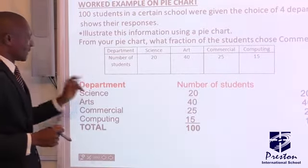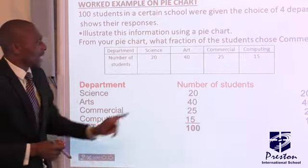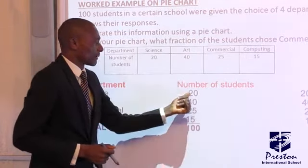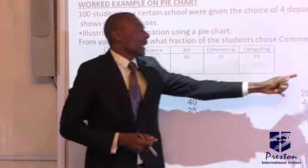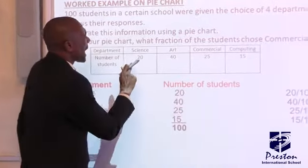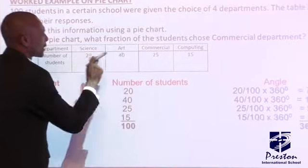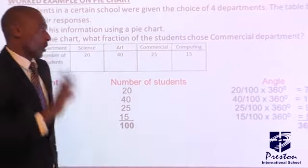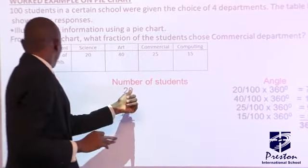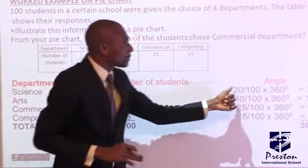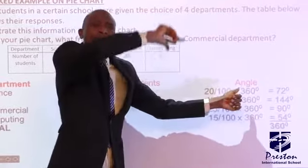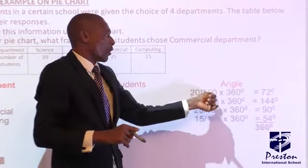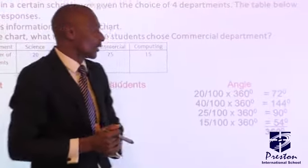The first thing is, these are the departments for science. How many students chose our science department? 20. How do I now get the angle? Getting the angle means, add everything together here. 20 plus 40 plus 25 plus 15 will give me 100. That means to get the angle for science, which is 20, it's 20 over 100 times the sum of angle of a circle is 360. 20 over 100 times 360 will give me 72 degrees.